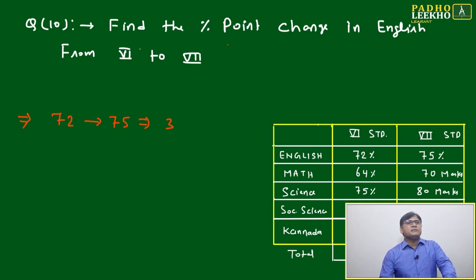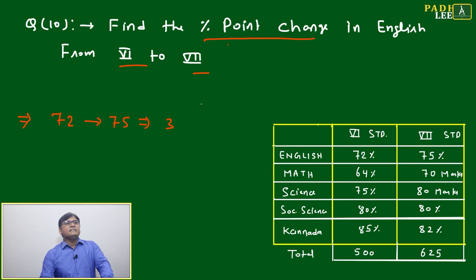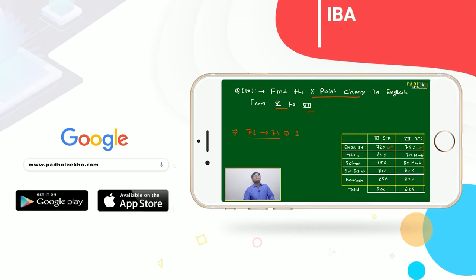Find the percentage point change in English from 6th to 7th. They are asking percentage point change, not percentage change of percentage. Data is already given in percentage: English is 72% in 6th and 75% in 7th. What is the change? 72 to 75.